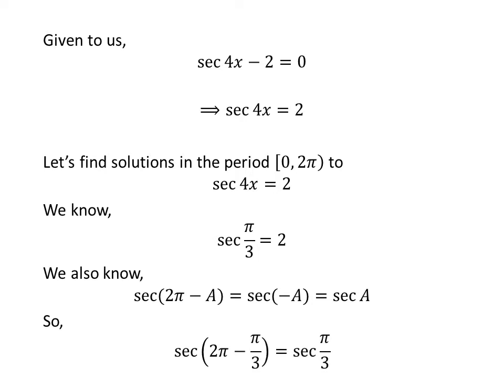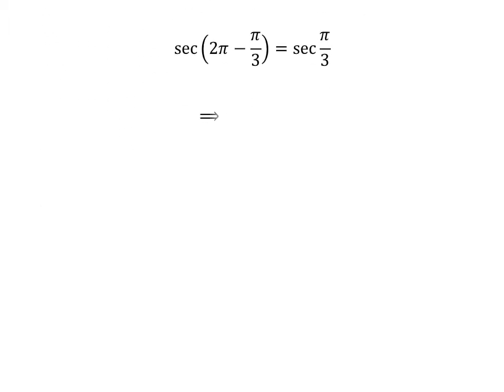Application of the above identity implies that sec(2π - π/3) equals sec(π/3). As 2π - π/3 equals 5π/3, so sec(5π/3) equals 2.